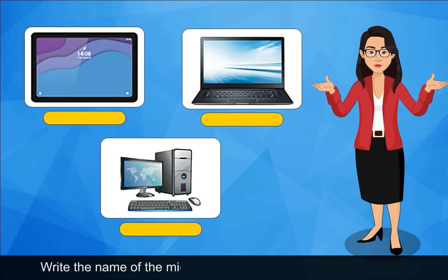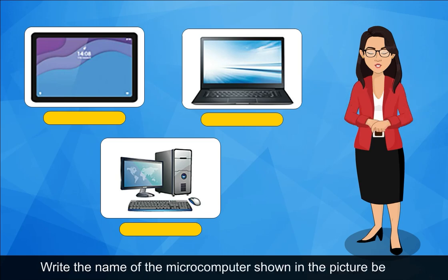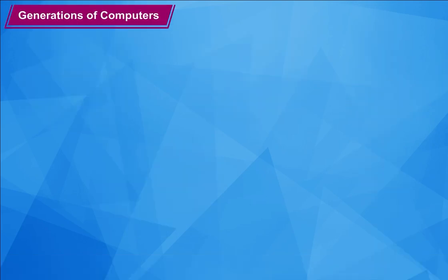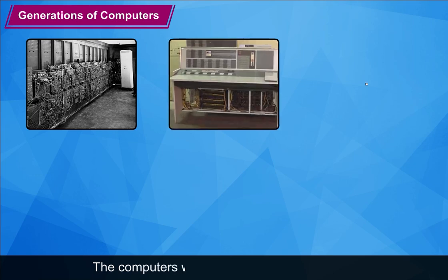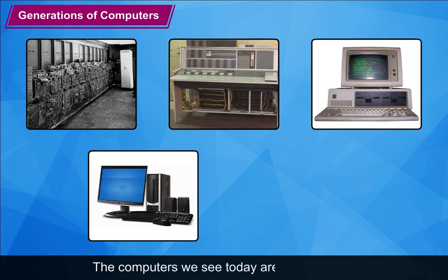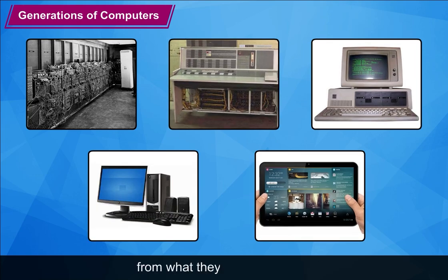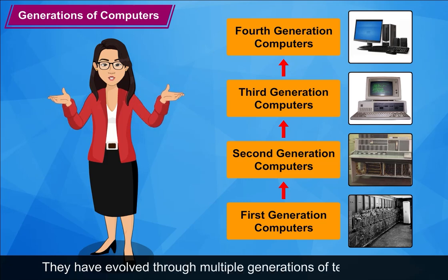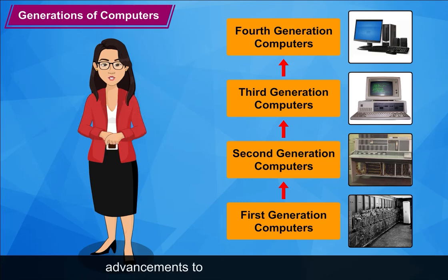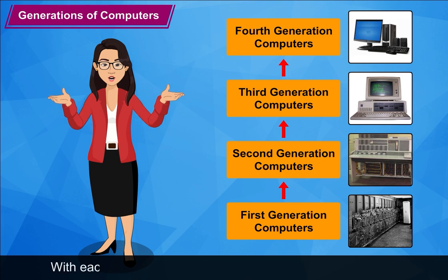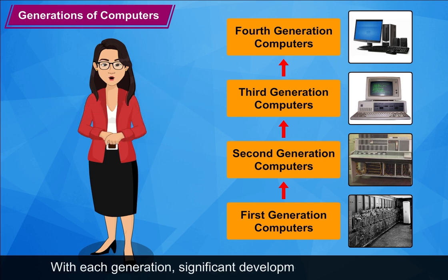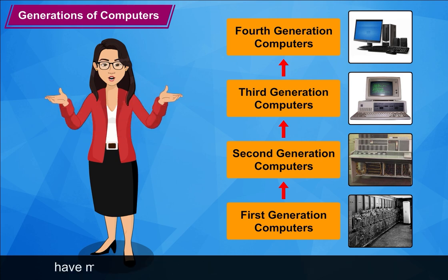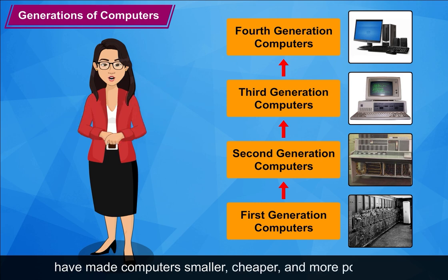Write the names of the computers shown in the pictures below. The computers we see today are very different from what they were years ago. They have evolved through multiple generations of technological advancements to reach their current form. With each generation, significant developments in technology have made computers smaller, cheaper, and more powerful.